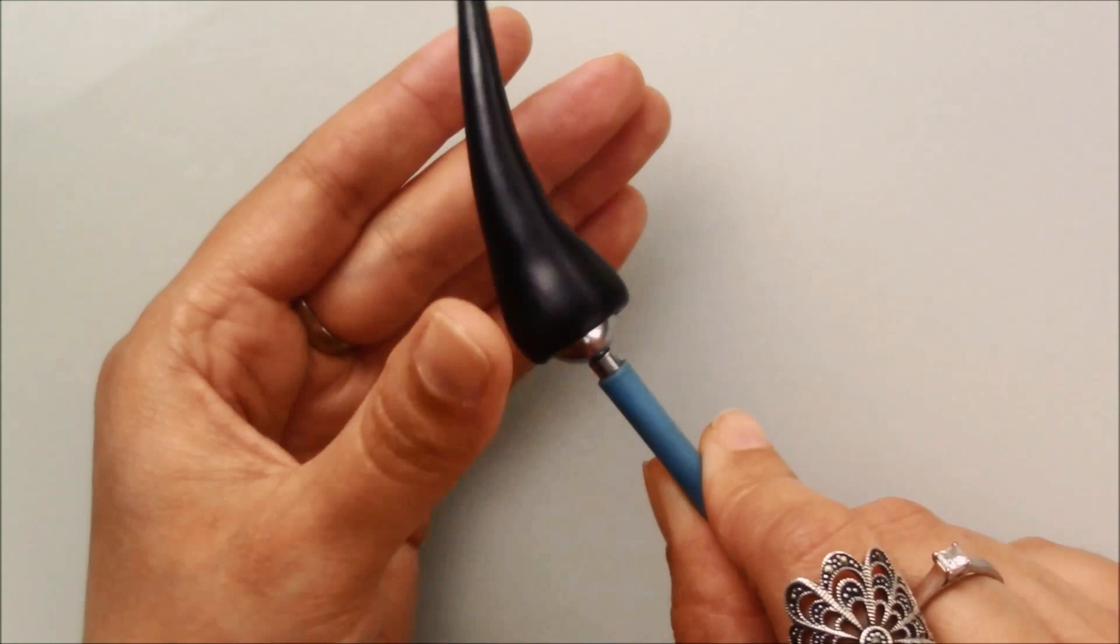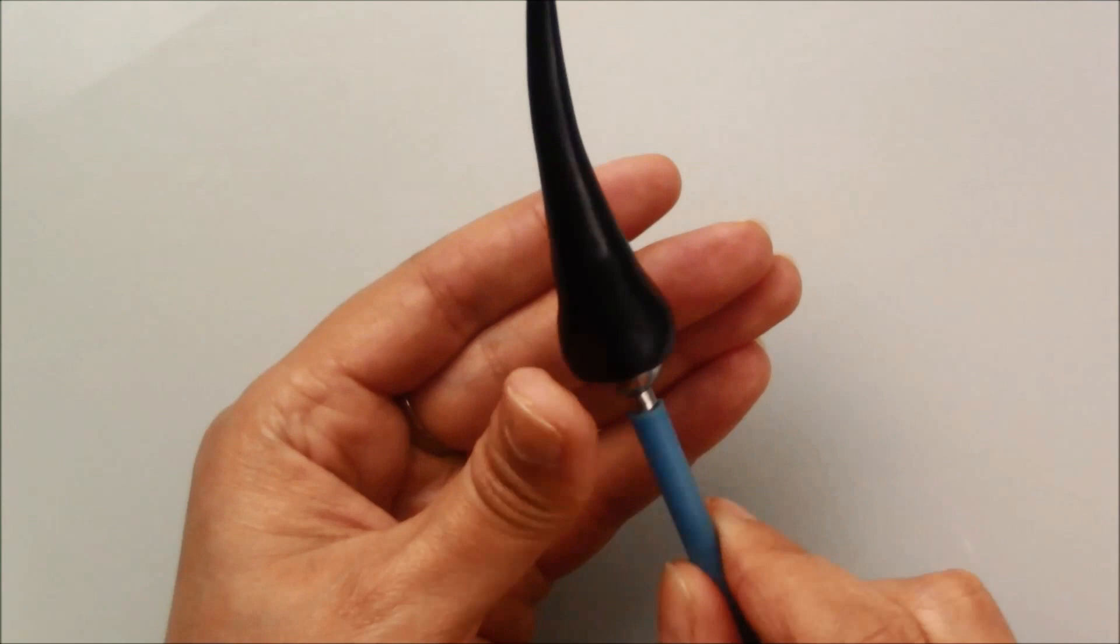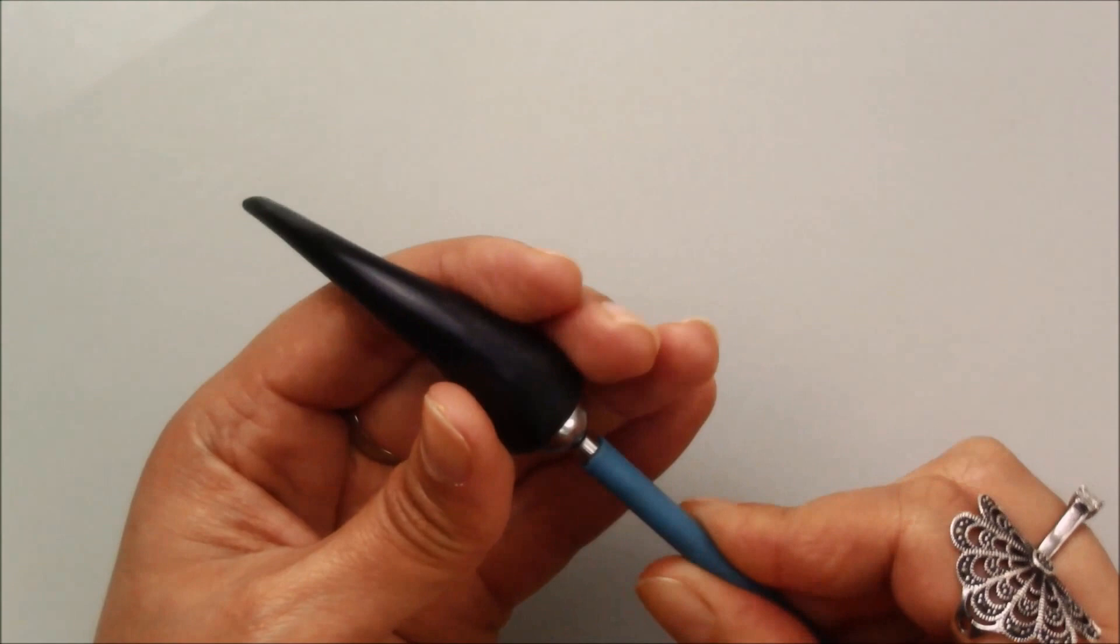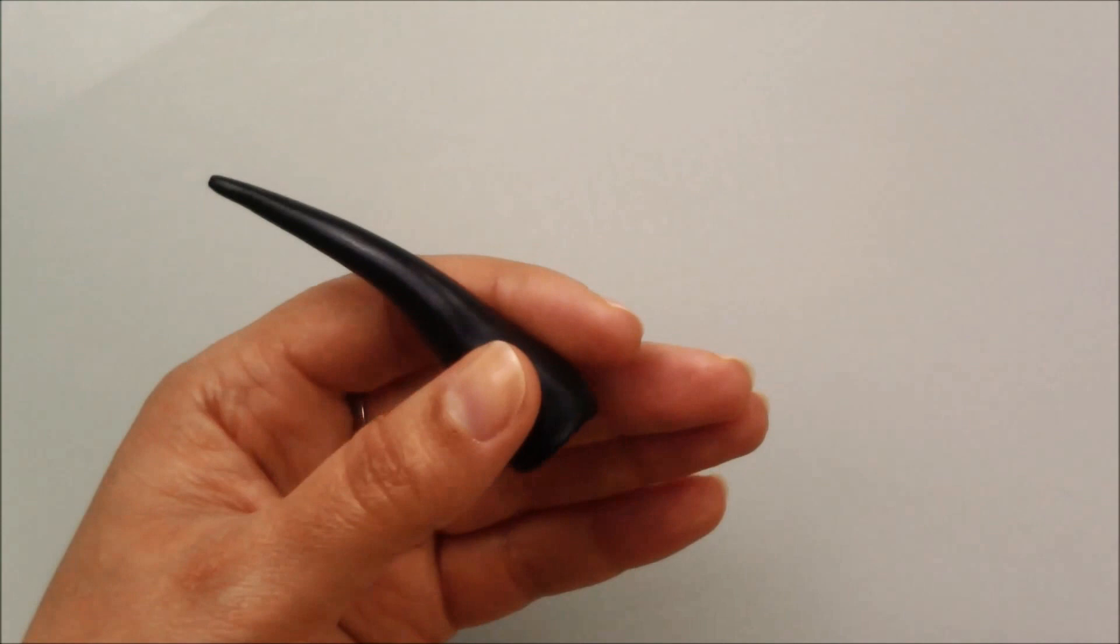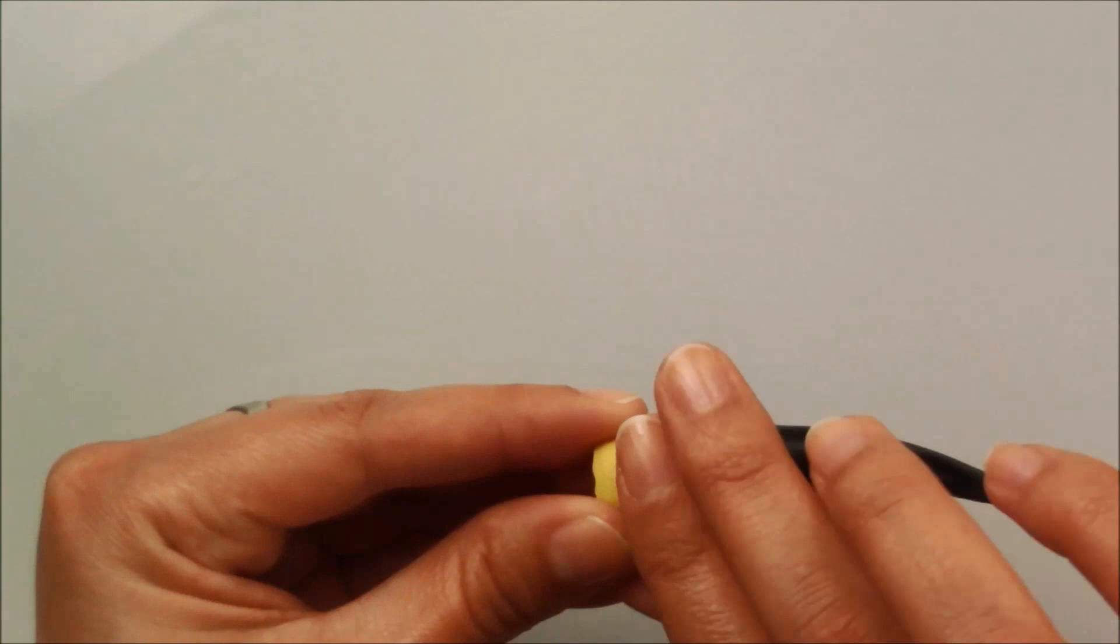Once it looks like the ball tool has a hat, you can remove it carefully by twisting the tool. Now you can place it on the base and keep shaping the opening of the shell. Once you're happy with it, you can start curling the end of the teardrop.